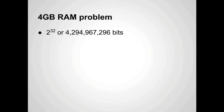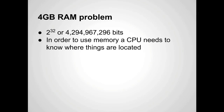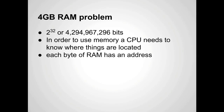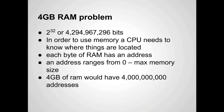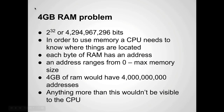Two to the 32nd is 4,294,967,296 bits. In order to use memory, a CPU needs to know where things are located — each byte of RAM has an address ranging from zero to whatever your maximum memory size is. So four gigabytes of RAM would have roughly four billion addresses. Anything bigger than this value isn't addressable by the CPU; it just doesn't have capacity for it. It's sort of like if you try to count to 20 on your hands — you run out of fingers. That's essentially what's happening.